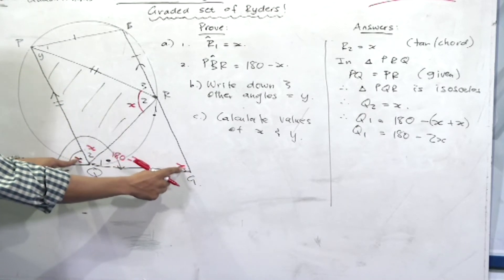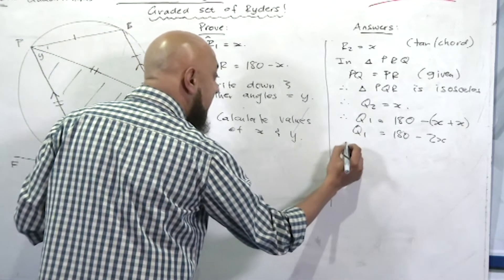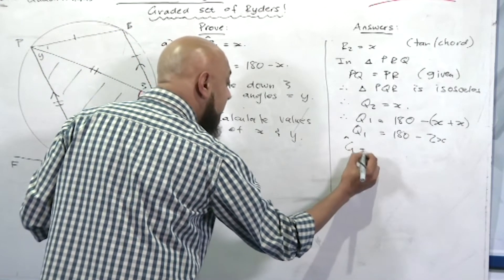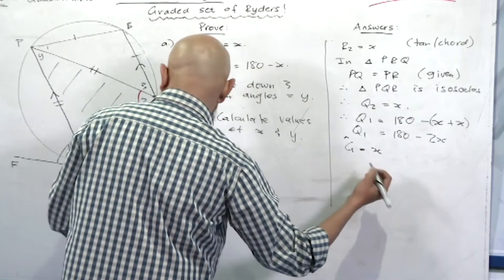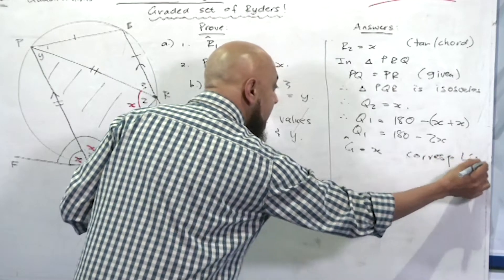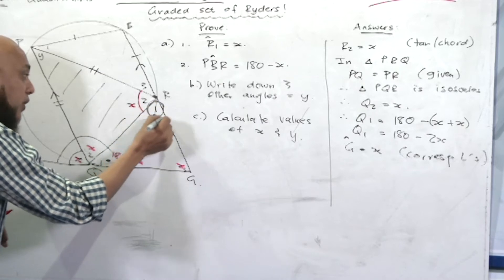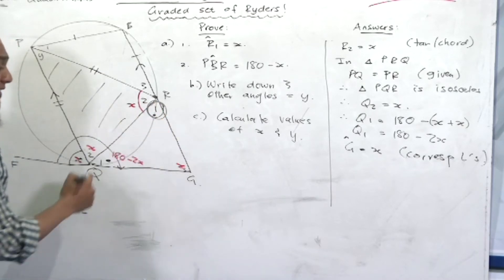So if this angle is equal to x, angle g is also equal to x. They are corresponding angles. So therefore angle g is equal to x because of corresponding angles, and we know corresponding angles are equal.